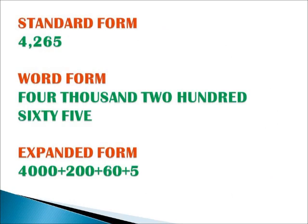Now children, let's learn 3 forms to represent the numbers. The first one is standard form. The second one is word form. And the third one is expanded form. In the standard form, we represent the 4-digit numbers as 4,265. In word form, we represent the number as four thousand two hundred sixty-five. In expanded form, we represent the number as 4000 plus 200 plus 60 plus 5.